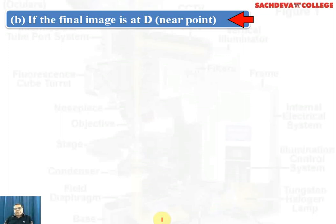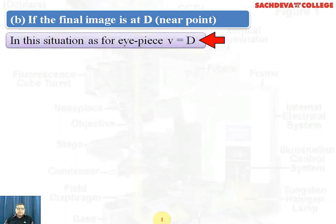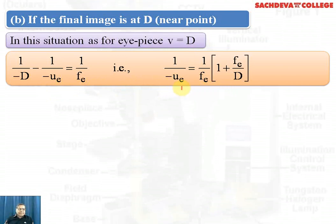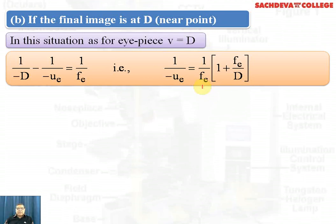Case 2: the final image is at D, the near point, i.e., 25 centimeters from the eye. For the eyepiece, V equals D, the least distance of distinct vision (25 cm). Using the lens formula: 1 over (minus D) minus 1 over (minus Ue) equals 1 over Fe, which gives 1 over (minus D) plus 1 over Ue equals 1 over Fe. From this, minus 1 over Ue equals (1 over Fe) times (1 plus Fe over D), where Fe is the focal length of the eyepiece and D is the least distance of distinct vision.